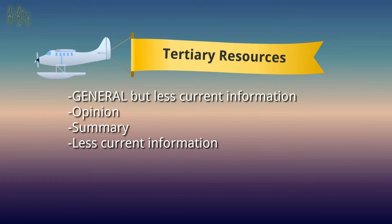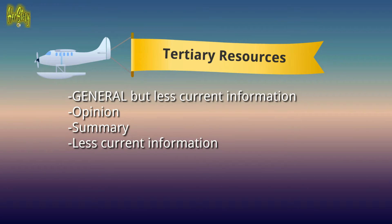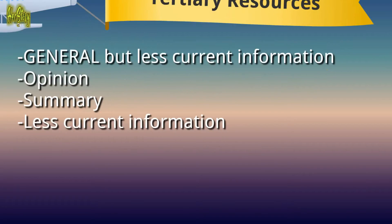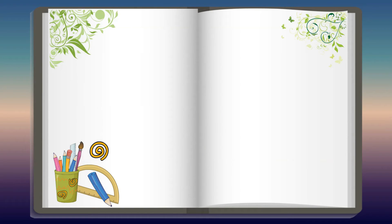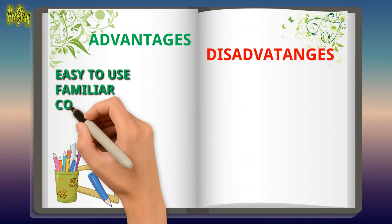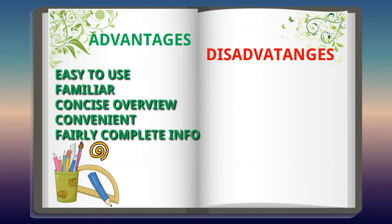Tertiary resources are general information but contain less current information. They can be an opinion or are usually in summary form. The advantages of using tertiary resources include: they are easy to use, familiar to most people, contain a concise overview, are very convenient, and contain fairly complete information.